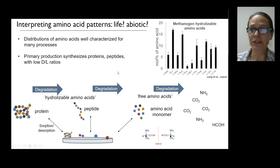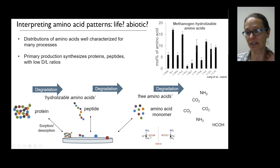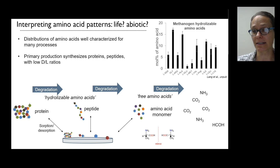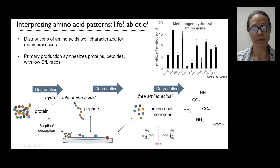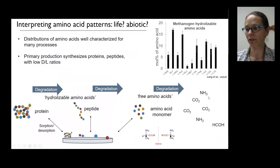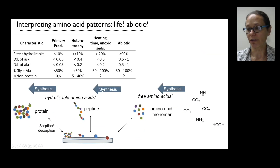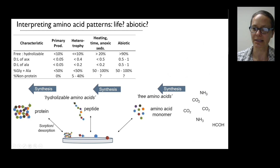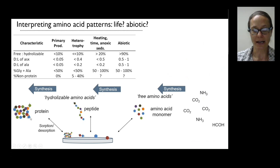These biologically produced amino acids tend to be predominantly in the L-form rather than the D-form — they are mirror images, and life tends to produce L-form amino acids. Abiotic synthesis tends to produce a mixture. You can break down proteins into peptides, which are strings of amino acids, then into monomers, then further into CO2 and ammonia. The reverse is also possible — life and abiotic synthesis both start with monomers and string them together into peptides and proteins.